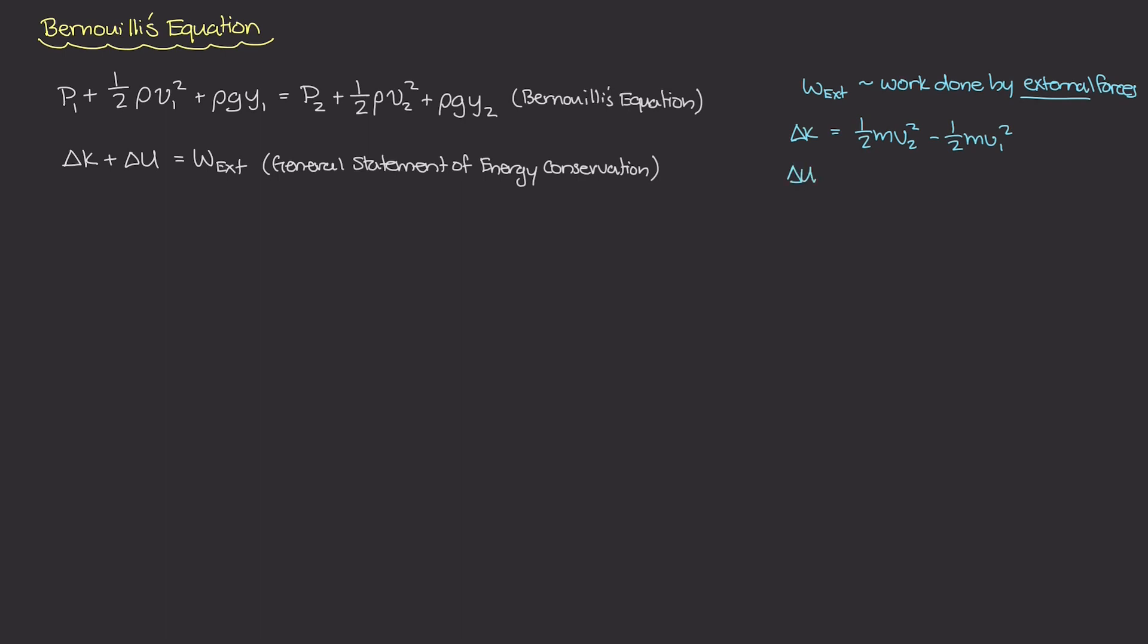And for that delta U term, that is the change in potential energy, and more specifically, the change in gravitational potential energy. You might know it as mgh, and in our case, this is going to be mg times y2 minus mg y1. So this is the gravitational potential energy at a point 2 minus mgh of a point 1, where m is the mass,